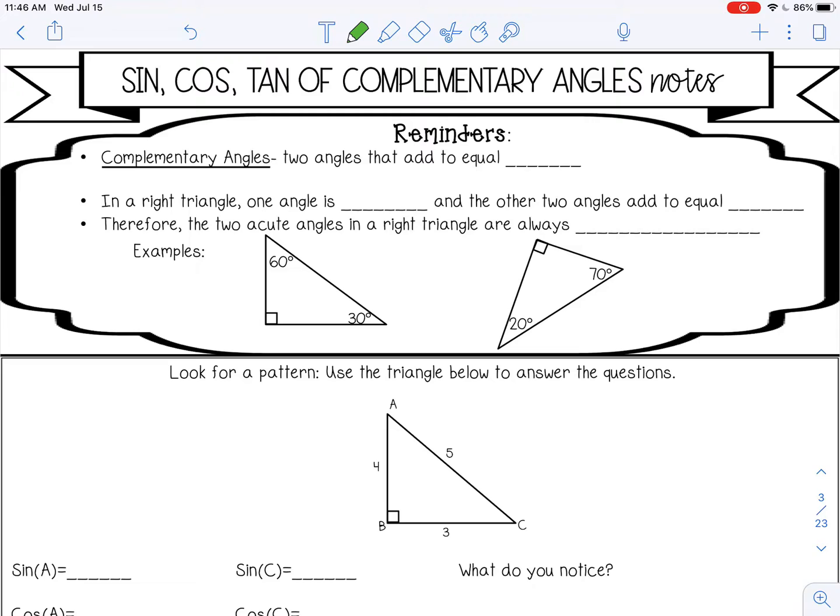Let's go over some reminders first. Remember, complementary angles are two angles that add to equal 90 degrees.